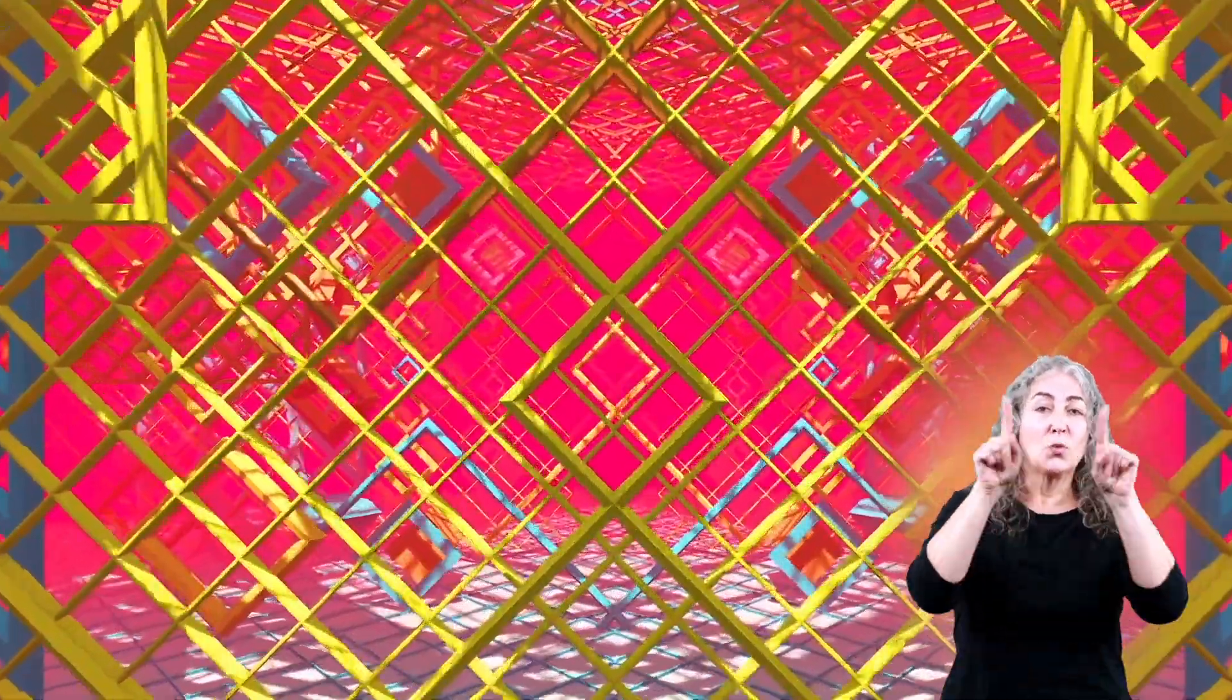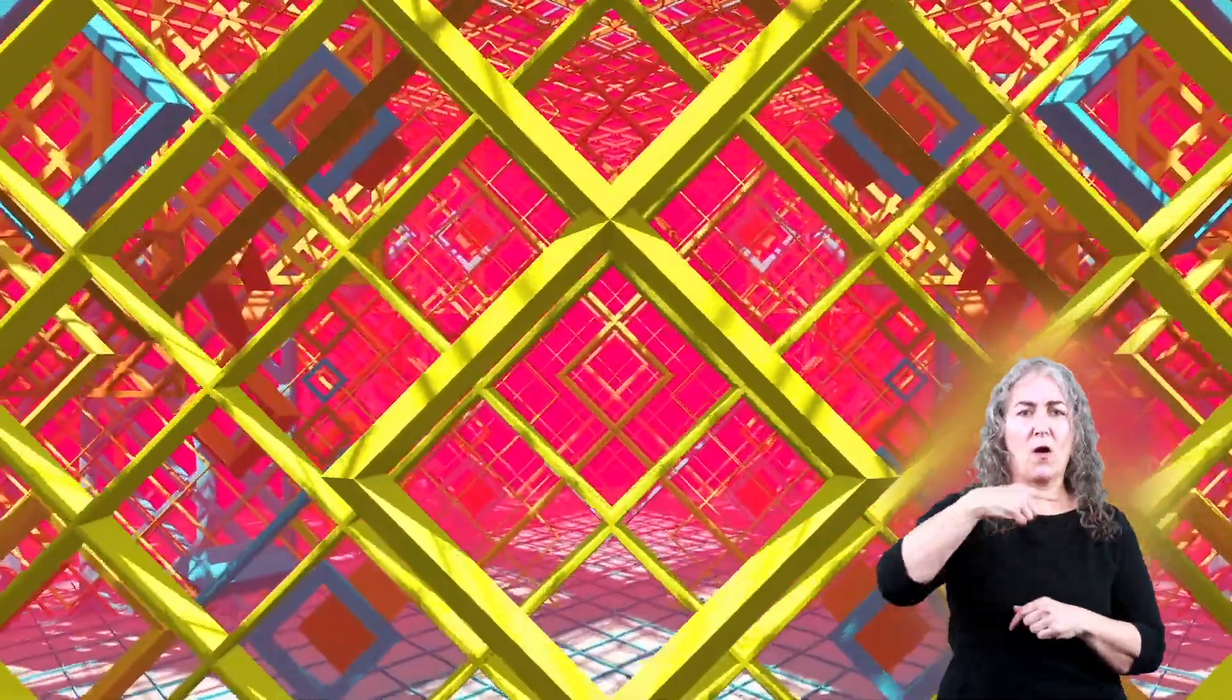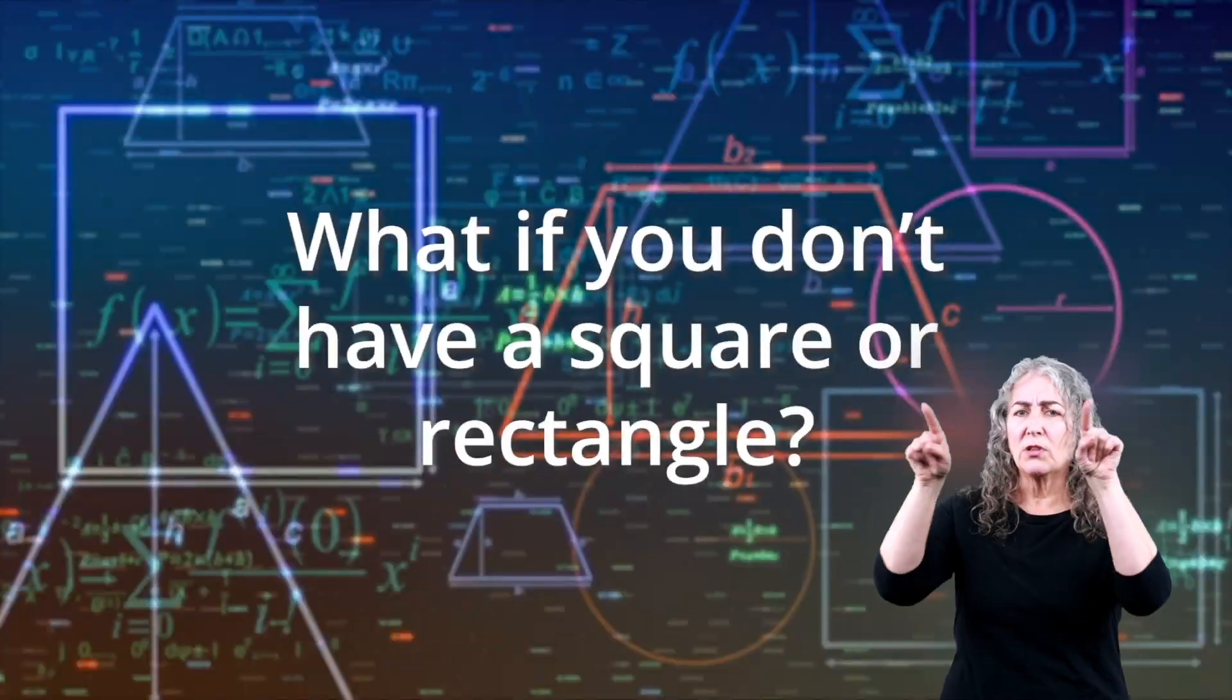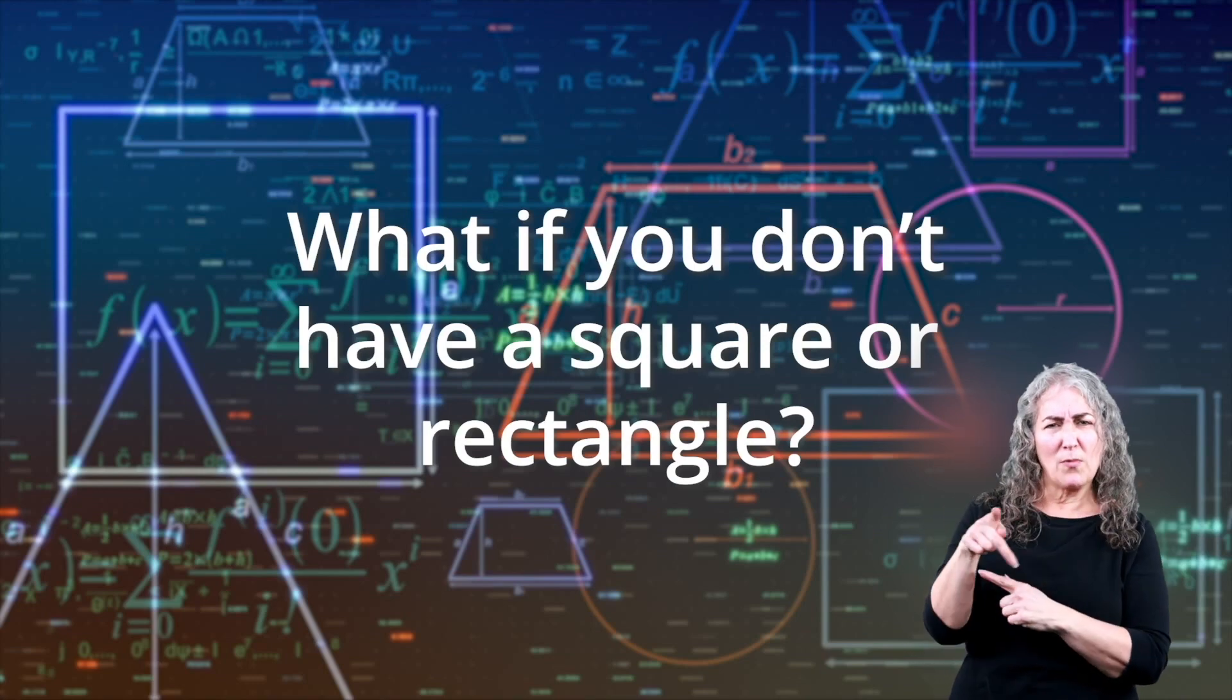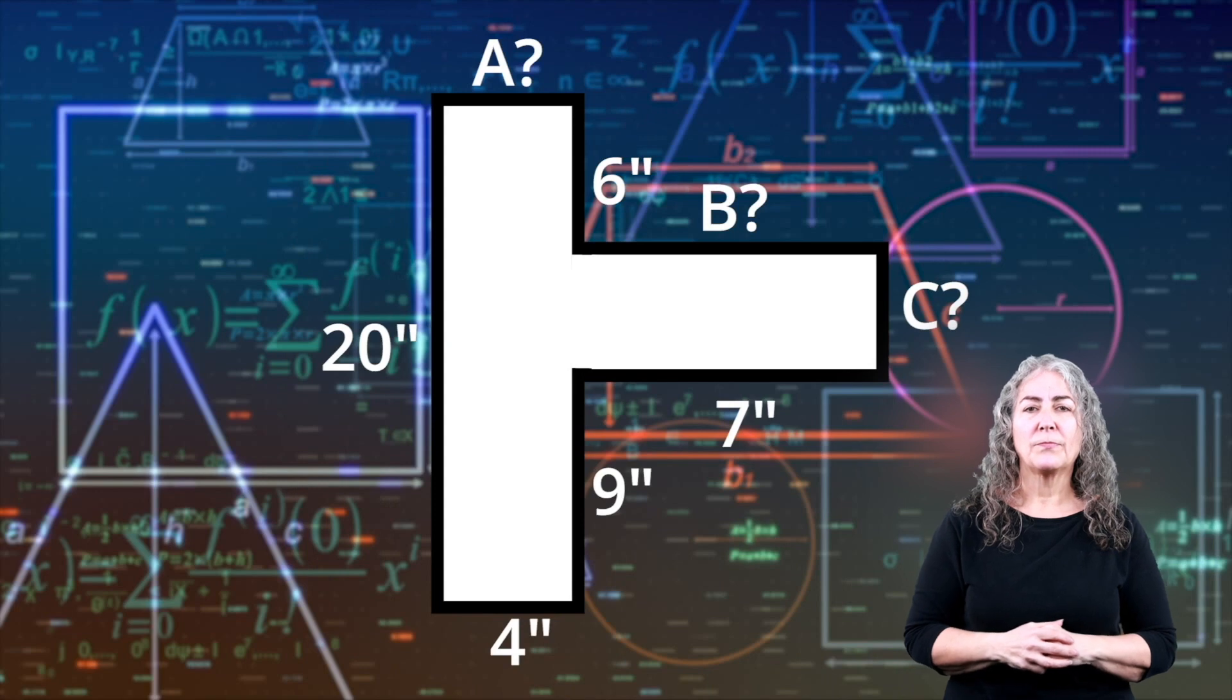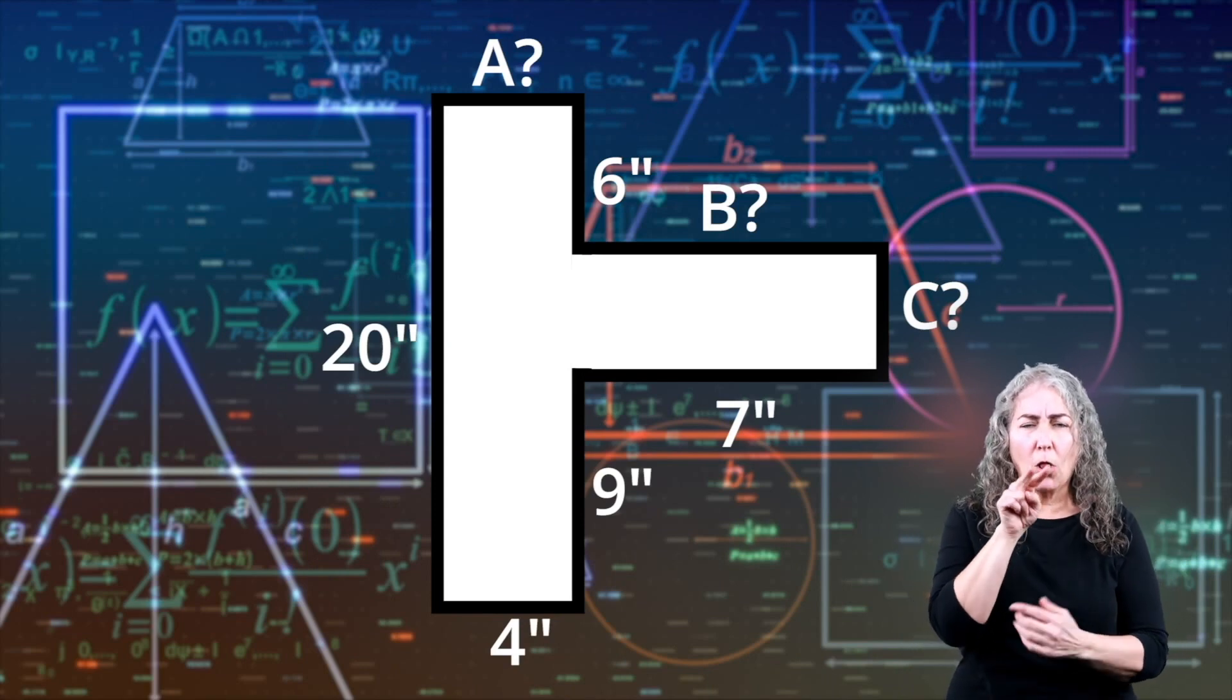Squares and rectangles with all different perimeters and areas are all around us. But, what if you don't have a square or a rectangle? What if you're trying to find the perimeter and area of an odd shaped space? Like this one. As you can see, it's not a rectangle and it's not a square.